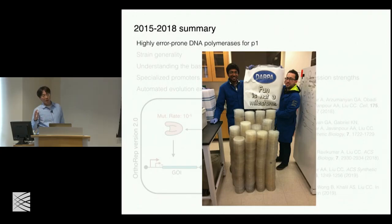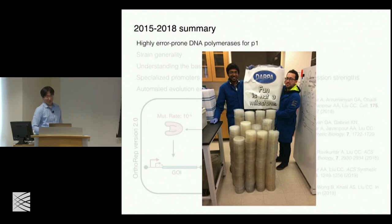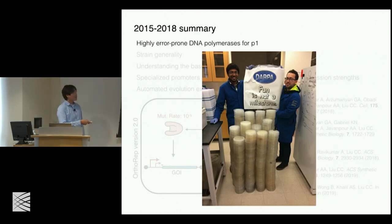Most of our time in the past few years has been spent on turning this initial orthogonal replication system into one that's highly error-prone for continuous evolution — we want this polymerase to go at a very high mutation rate, which was hard because it involved a lot of polymerase engineering. Arjun led the quest to do so.